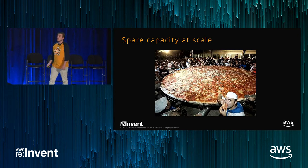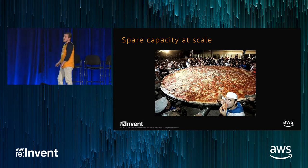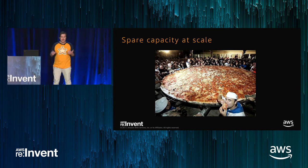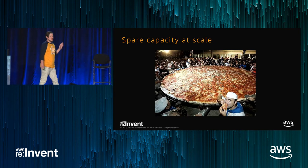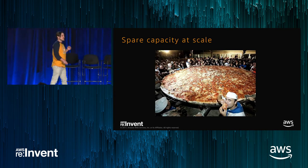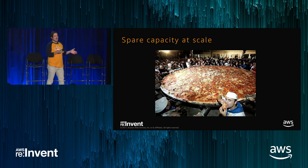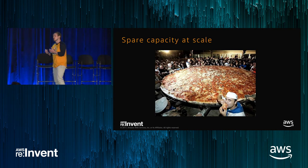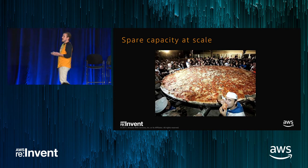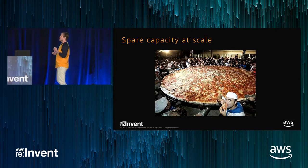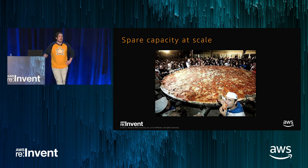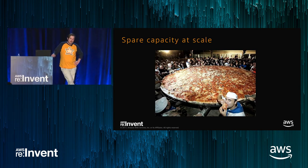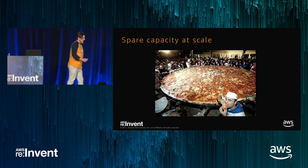So what is Spot? Spot is spare EC2 capacity. There's no minimum, there's no maximum — it's just our unused on-demand capacity. But it's important to understand that yes, it's spare, but don't think of it as some small amount of infrastructure unused in your data center. It's a huge amount of unused infrastructure. There's really a fantastic amount of unused EC2 instances for you to leverage. I want to talk about one example in particular.